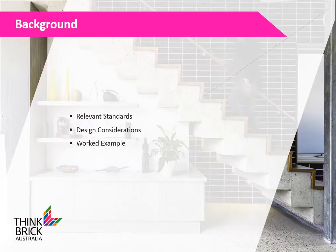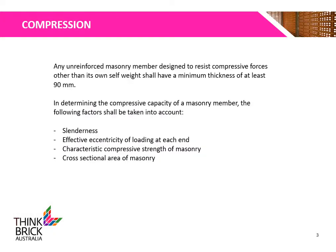Some background information before we begin. This presentation will go through relevant standards such as AS3700 Masonry Structures to determine brick design for compression, as well as design considerations and a worked example for an unreinforced clay masonry wall. Any unreinforced masonry member designed to resist compressive forces other than its own self-weight shall have a minimum thickness of at least 90 mm.